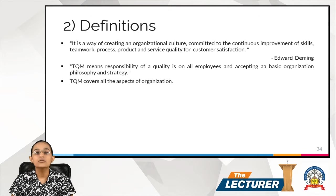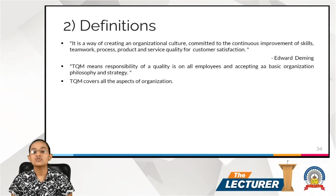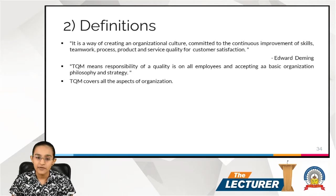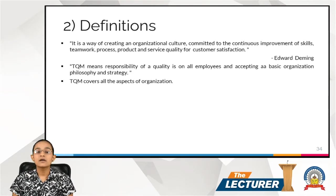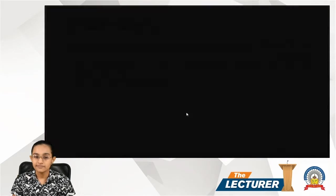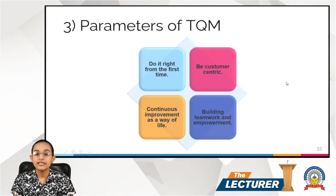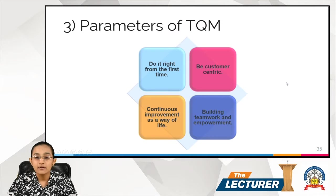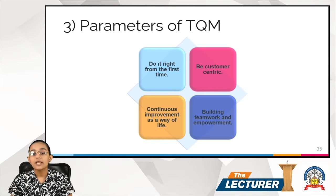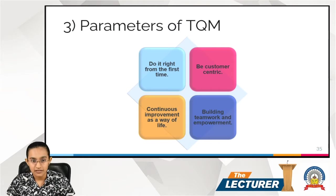Quality management covers all aspects of the organization. The four key parameters of TQM are: do it right from the first time, be customer-centric, treat continuous improvement as a way of life, and build teamwork and empowerment.